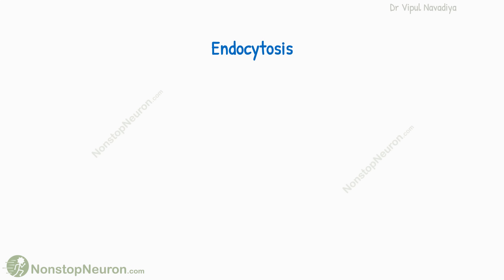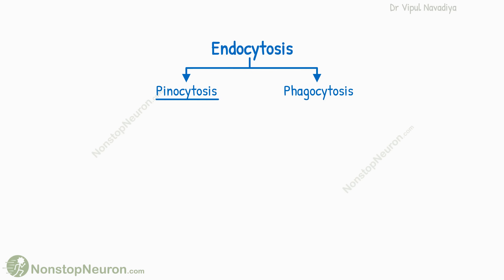Now let's go into more detail. There are two main forms of endocytosis: pinocytosis and phagocytosis. First, let's talk about pinocytosis.